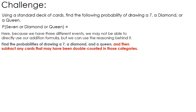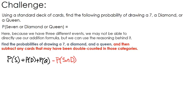We're going to find the probability of a 7 plus the probability of a diamond plus the probability of a queen. But then we're going to subtract some things: what if there is a 7 that's also a diamond? What if there's a 7 that's also a queen? And what if there's a diamond that's also a queen? Anything that may have gotten double counted, we subtract out at the end.